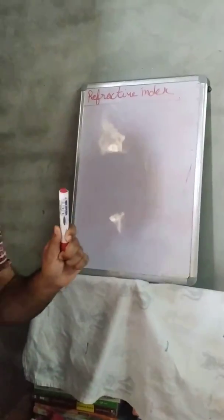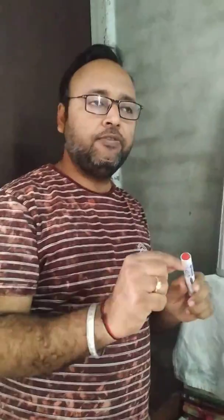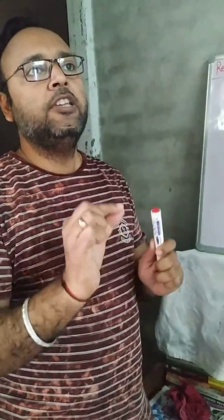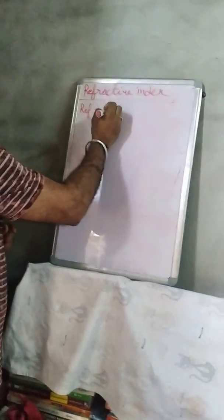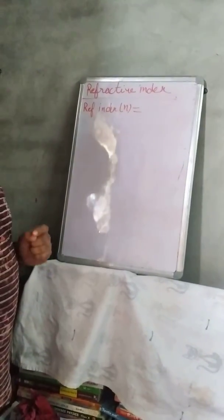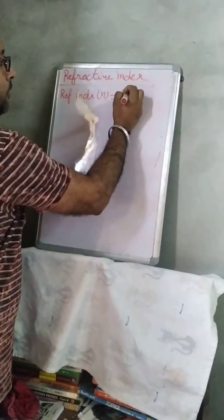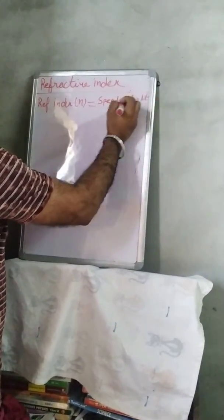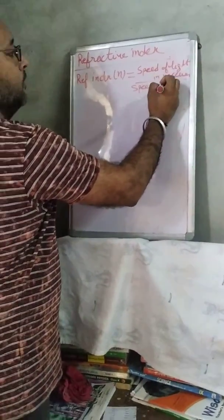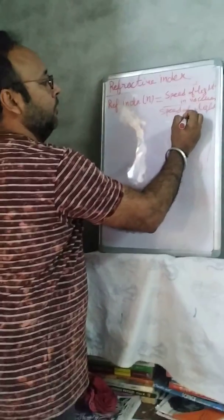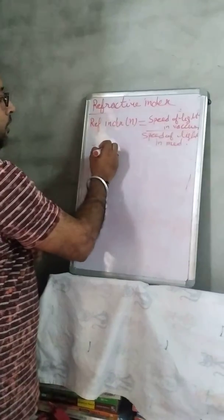Next is refractive index. As we have already discussed, the speed of light changes when you travel from one medium to another. So the main physical quantity there is bending of light, that means change in angle also. The main physical quantity which is responsible for the change in speed of light is refractive index. Refractive index is denoted by n, and is defined as the speed of light in vacuum divided by speed of light in medium.